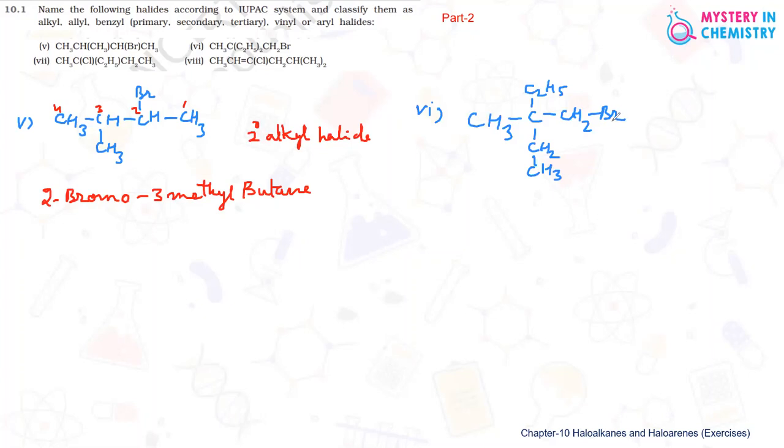Here the naming is starting from the carbon containing bromine. We can start with 1, 2, 3, 4, and by that we can name it as 1-Bromo, then 2-ethyl. Ethyl should come first.